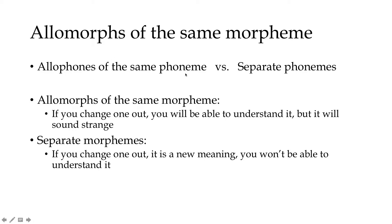Morphemes can also have allomorphs. We saw that a phoneme can have many allophones — two sounds which are allophones of the same phoneme. That meant if I have two sounds and I switch one for the other, it wouldn't change the meaning. Whereas with separate phonemes, changing one for the other would change the meaning.